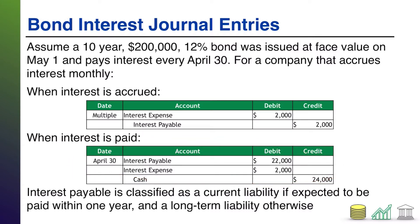So this is what your April journal entry would look like. Interest in this situation, because it's being paid out every year, would be classified as a current liability. If it was not being paid out for several years, you would put it as a long-term liability, but typically interest is paid more often so it's typically a current liability. Notice the bond was a 10-year bond, so even though the interest is a current liability, that bond — at least for the first nine years of its life — will be a long-term liability. So that's interest. It's handled just like interest on any other debt instrument, such as notes payable.